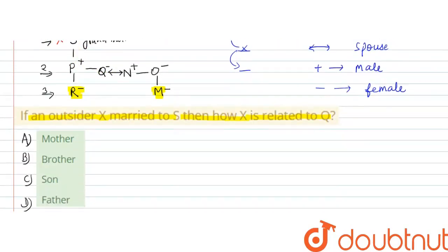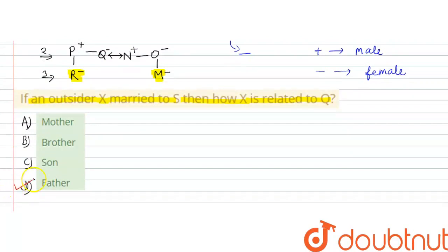Option me agar hum dekhe, option D, father is the right answer. Hope you like this video. Thank you.